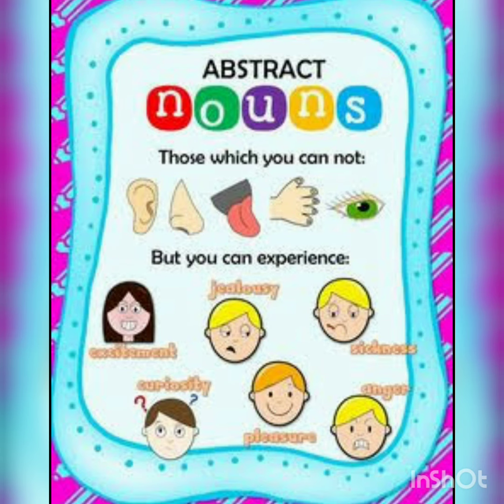Next is abstract noun. What is an abstract noun? Nouns which we cannot see or touch, but which we can only think of, are known as abstract nouns. It generally represents a quality or an idea. Look at the picture — here, jealousy, curiosity — all these are examples of abstract noun.